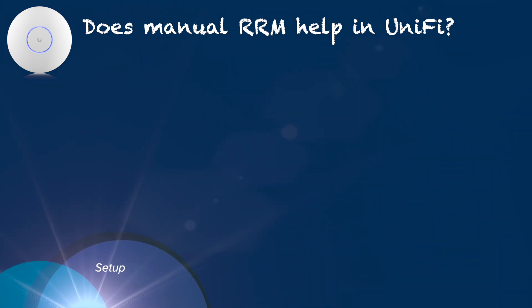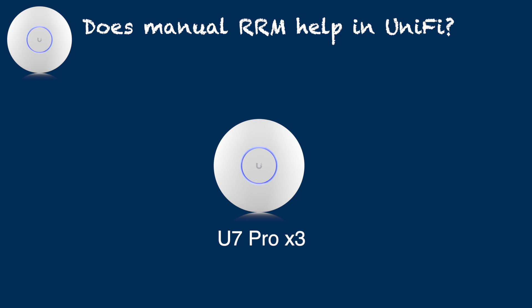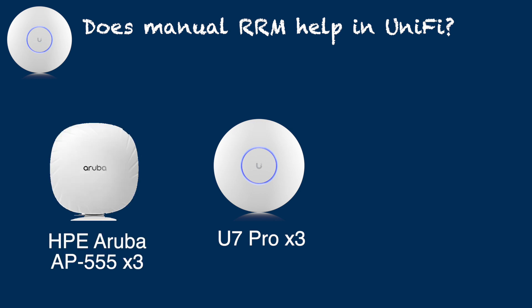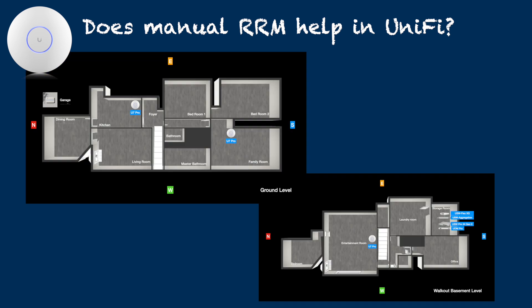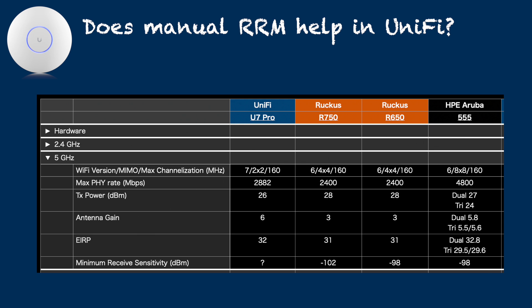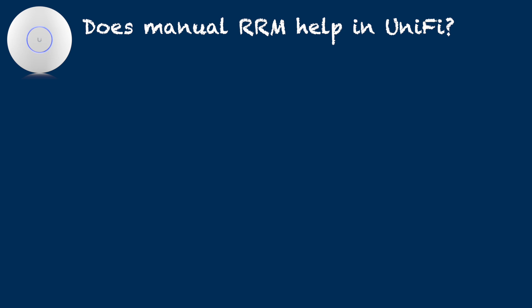For the purpose of today's testing, I have used 3 Ubiquiti UniFi U7 Pro access points. Additionally, to obtain radio resource management parameters, I have used a 3x HP Aruba AP555 setup and a Ruckus Unleashed setup using 1x R750 and 2x R650s. Both of these systems are enterprise-grade Wi-Fi 6 systems with built-in automatic radio resource management. For each brand setup, 3 access points were placed similarly in my home. All access points have fairly similar EIRP. As a testing client device, I have used an iPhone 14 Pro Max, which is a Wi-Fi 6 2x2 client.